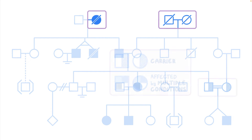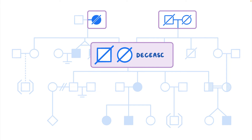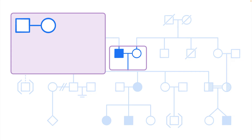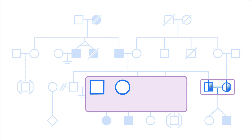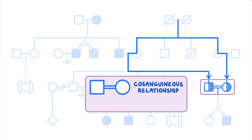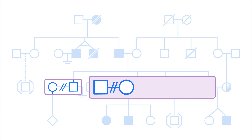One horizontal line connecting two individuals means they are in a relationship, and a line extending downwards from that line connects them to a row of their children. If there are two horizontal lines between two individuals, this is a consanguineous relationship, meaning they are related, indicating a higher risk of passing on autosomal recessive conditions. Two dashed lines in the middle of the relationship horizontal line indicates the two are no longer together, either separated or divorced.